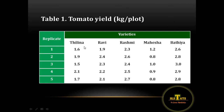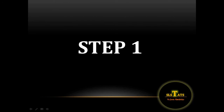The five varieties are Tilin, Ravi, Rashmi, Mahesha, and Bhatia. Each variety consists of five replicates. I'm going to demonstrate the analysis using three steps.